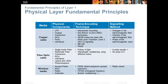This is a great reference slide for comparing and contrasting copper, fiber optic, and wireless media. It covers the different physical components, the frame coding technique, and the signaling method. With copper cable, the most common type is UTP — unshielded twisted pair — and in this class we will make a patch cable or crossover cable. Fiber optic works with either single-mode or multi-mode fiber. For wireless, we will talk about access points, radios, and different types of antennas.